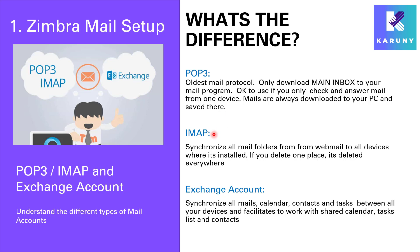IMAP is a more modern setup and it synchronizes all mail folders from your webmail to all the devices where it is installed. So if you have installed an IMAP account on your Outlook on your PC, you download your mail. If you have it on your phone as an IMAP account as well, it will download the same mails there. If you answer a mail on your phone, it will go to your sent items folder on your mobile, but it will also show up on your PC in that same folder. So it is a total synchronization of all your mail activities.